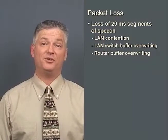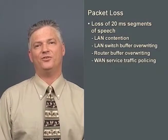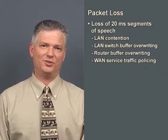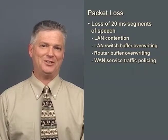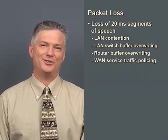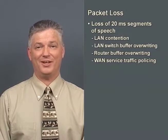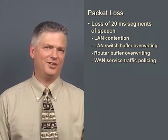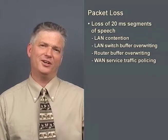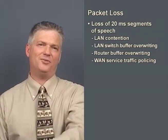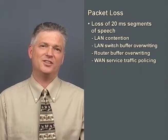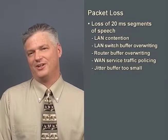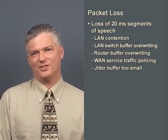Another way that packets disappear is because of policing of traffic on a WAN — we'll discuss this more in the next part, but in short, policing means throwing your data away when you try to transmit more than you signed up for, and this would cause packets to just disappear. Another way we could get buffer overwriting would be not just in network elements in the WAN when things get congested, but also at the jitter buffer at the far end. If our jitter buffer is too small, we're going to start overwriting stuff at the jitter buffer.